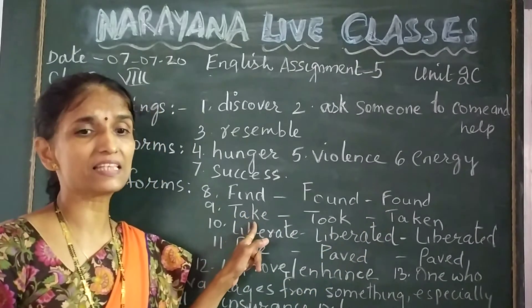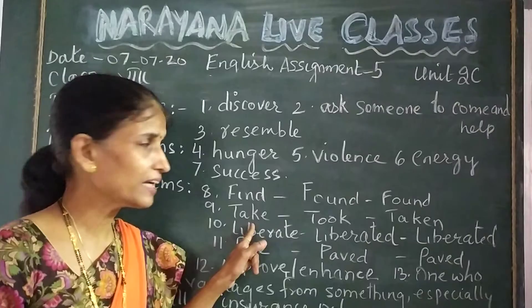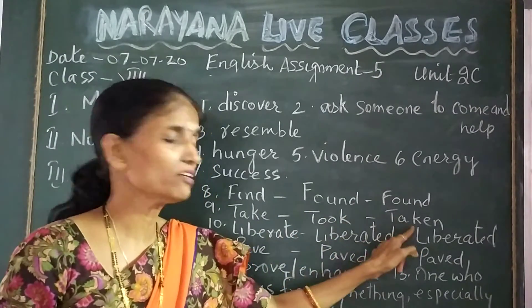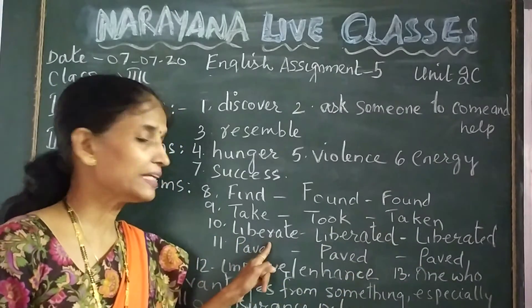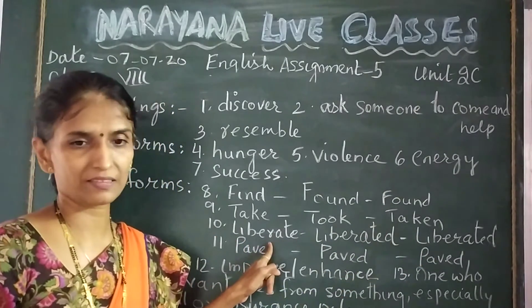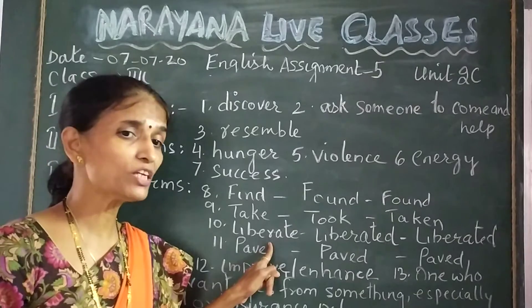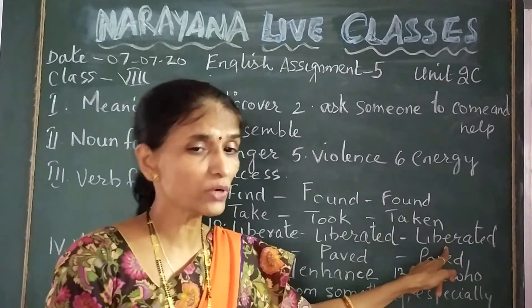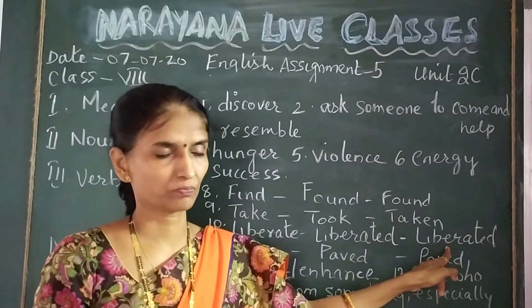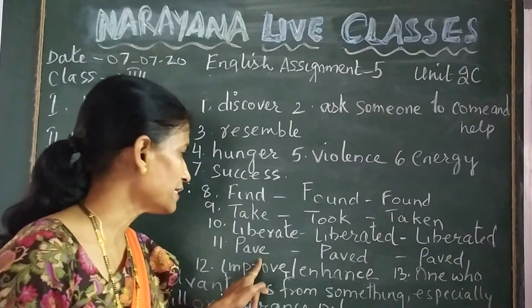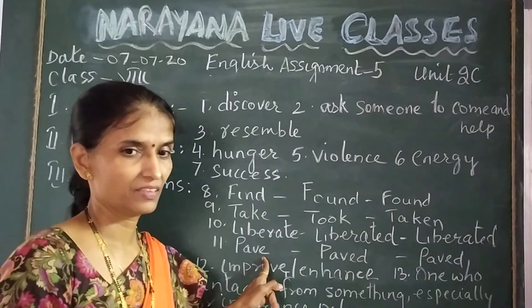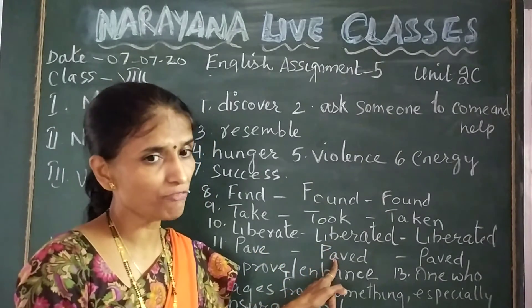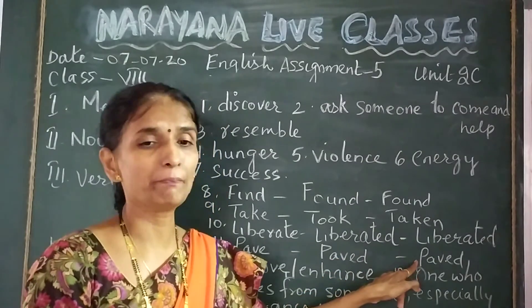The next verb is 'take'. Take, took, taken — those are the V2 and V3 forms. The next verb is 'liberate'. Its V2 form is liberated and V3 form is also liberated. The next verb is 'pave'. The V2 form is paved and V3 form is also paved.